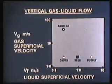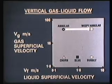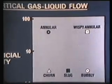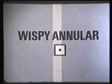We achieve the final flow pattern by raising the liquid flow rate. It is called wispy annular. The main difference between this and annular flow is the presence of large, fast-moving wisps of liquid in the center of the tube.